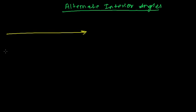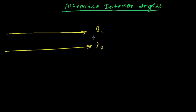If these two parallel lines, let's say line L1 and L2, are both parallel — this is the symbol for parallel lines — and if these two parallel lines are intersected by a transversal line, let's say line L...